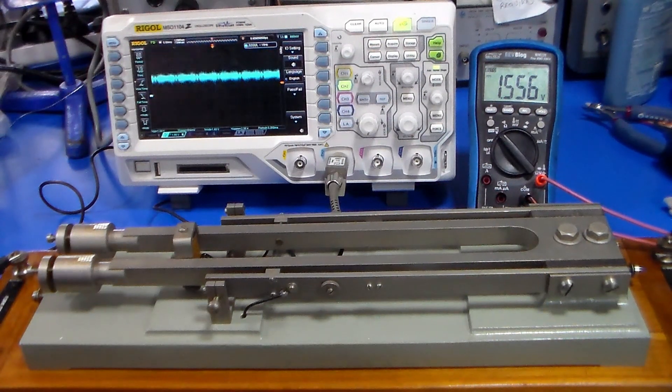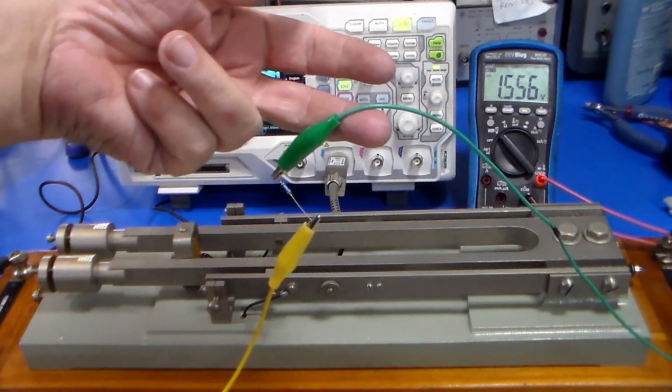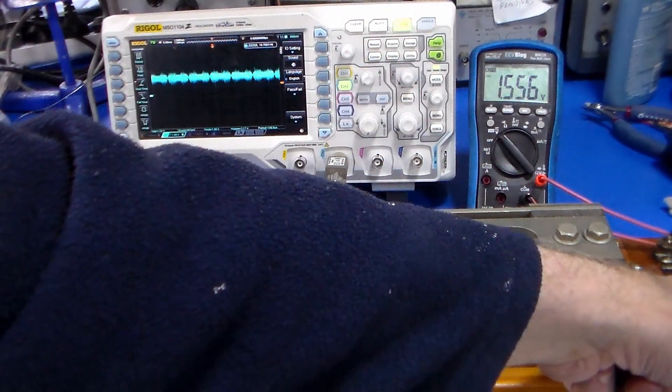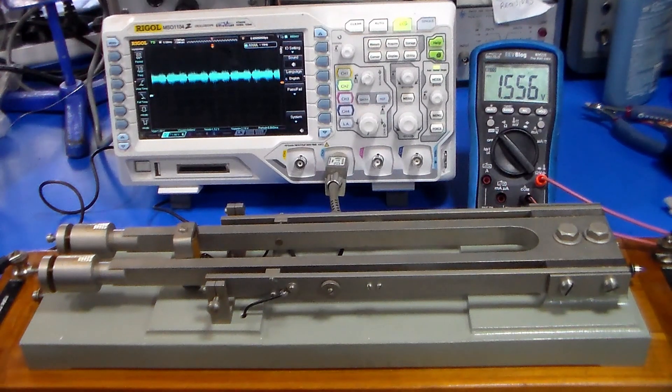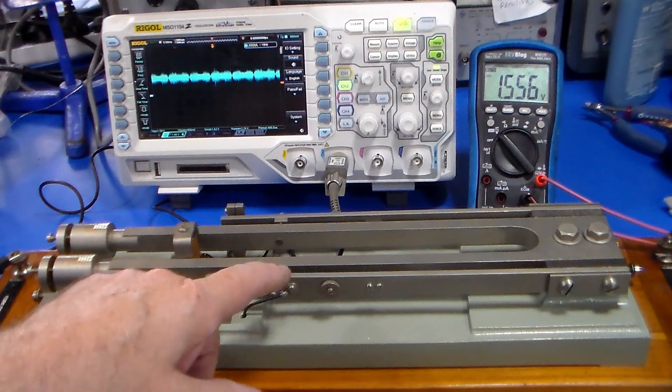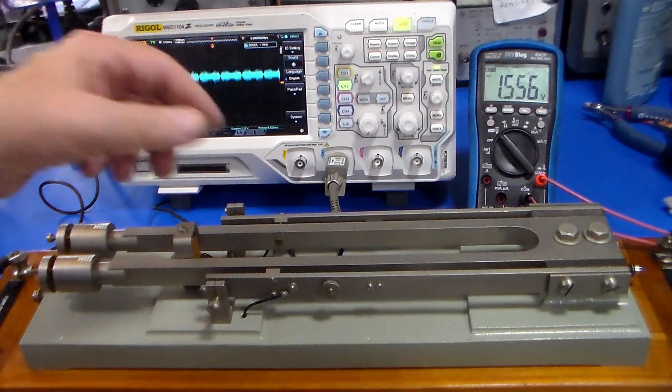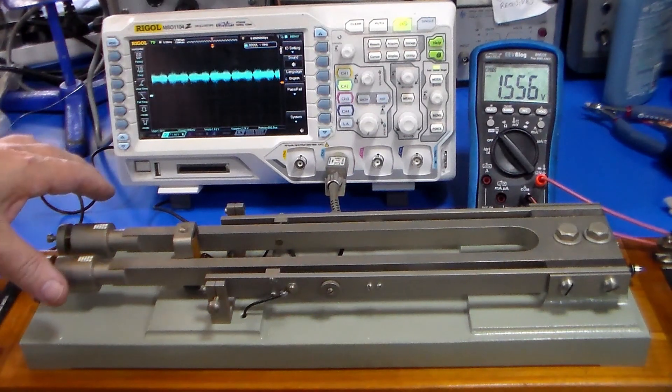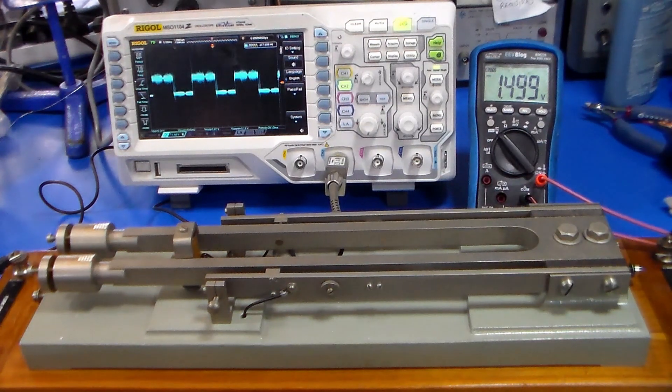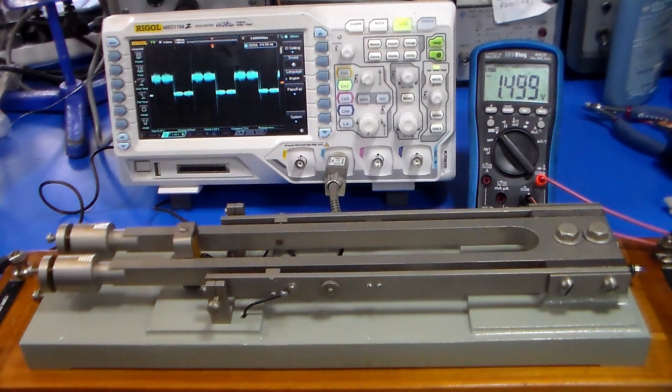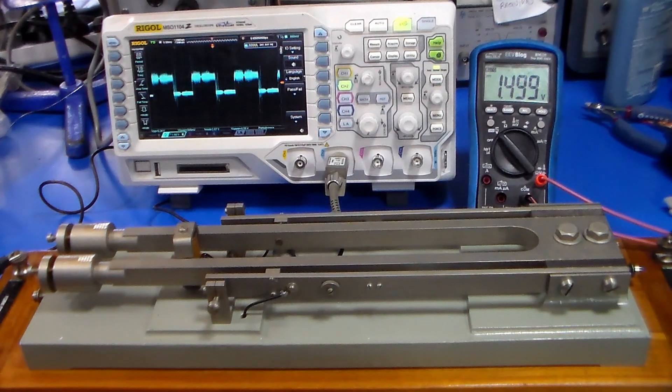What we've done is we've got a 2k2 resistor connected from the power here to this fork contact output, which is this contact here. Let's just flip the fork and start it, and as you can see we've got a square wave.